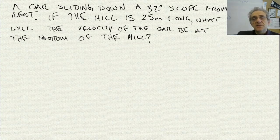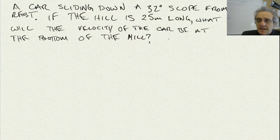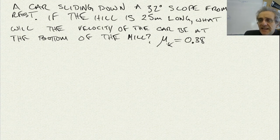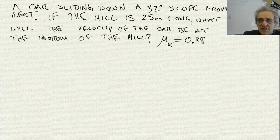So we have a question here. It says a car is sliding down a 32 degree slope from rest. If the hill is 25 meters long, what will the velocity of the car be at the bottom of the hill? Now we are missing one other piece of information and that is that the coefficient of friction is equal to 0.38. That's the kinetic coefficient of friction because the car is sliding.